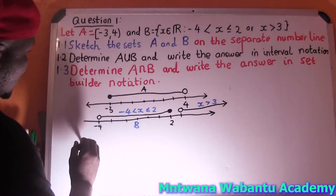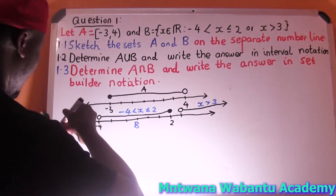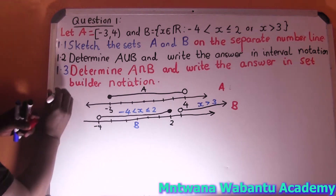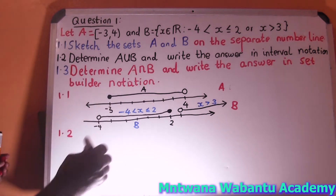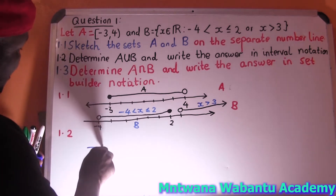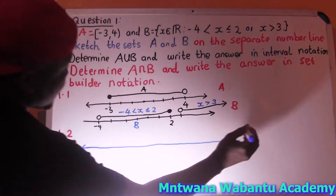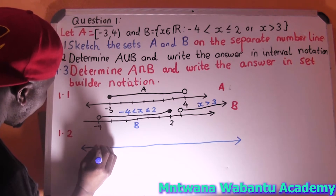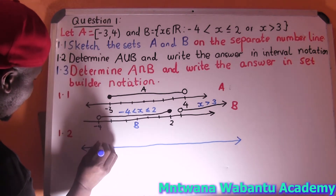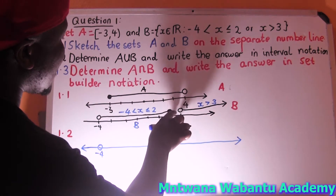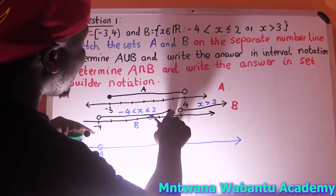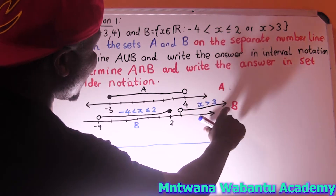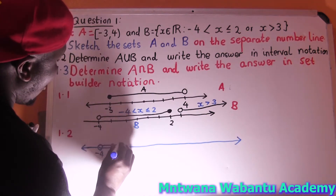This is Set A on a separate number line, and this is Set B on a separate number line. Now for part 1.2 we go for A union B. When we squeeze them together and bind them, the initial point is going to start from negative 4 — excluding. Even though there's a gap in B around that region, when you put them together the other set covers it.